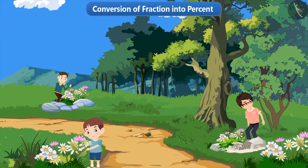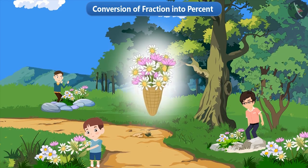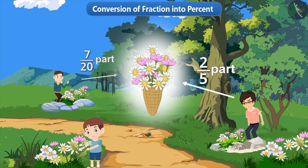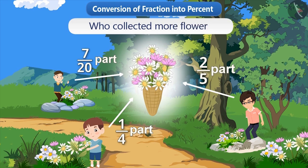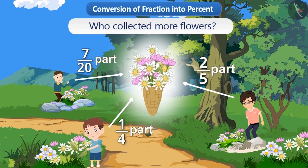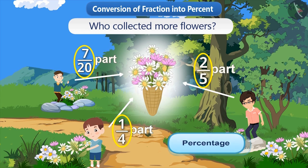Suppose Dinesh, Ramesh and Rahul gathered some flowers together. Out of the total flowers, if two-fifth part is gathered by Dinesh, seven-by-twentieth part by Ramesh and one-fourth by Rahul, can you tell who collected more flowers? Here we need to compare 2 by 5, 7 by 20 and 1 by 4. We can find the answer by comparing fractions, but we will make use of percentages here.